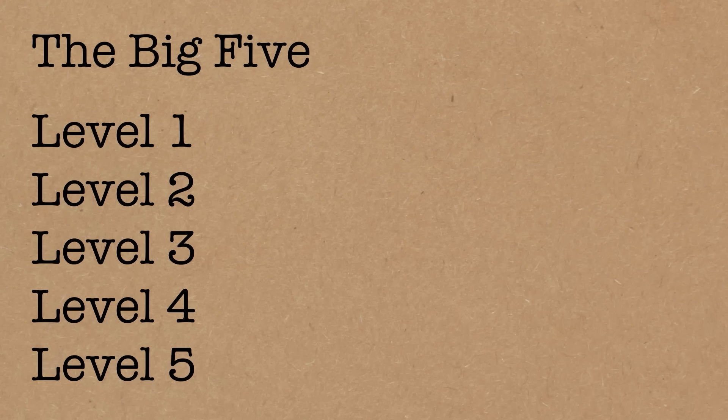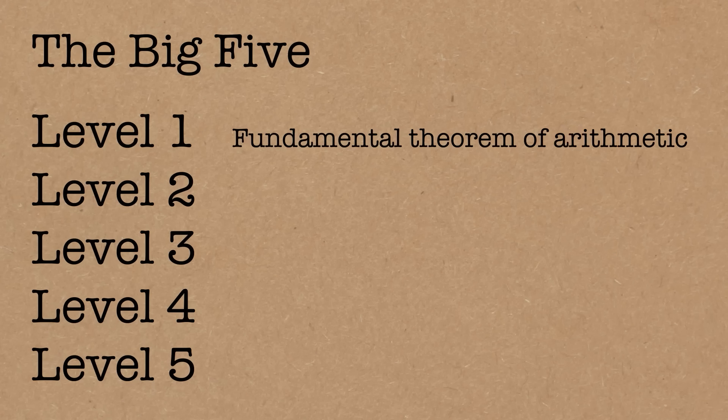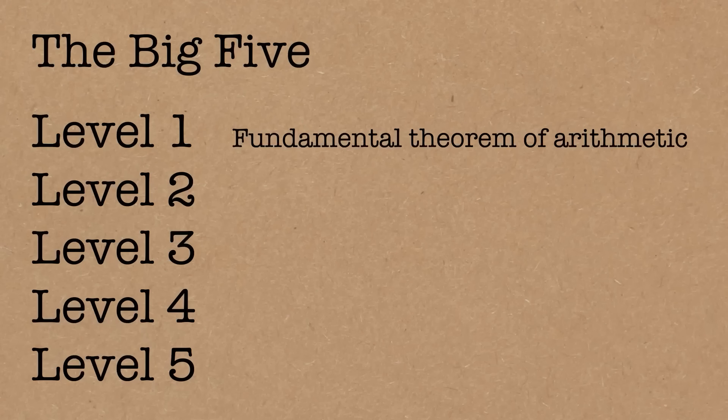Each one of these is more logically involved than the last. So level one, that's what you need to prove basic facts about numbers. Something like the fundamental theorem of arithmetic. That's the statement that any whole number, you can break it down into primes in essentially a unique way. You can prove it at level one. That's the simplest axiom scheme. You don't need lots of logically complex stuff to prove that.